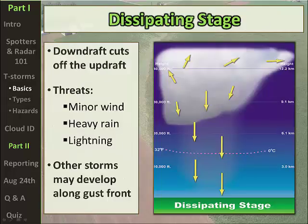The third and final stage is the dissipating stage. Here, the downdraft becomes strong enough that the updraft can no longer be sustained, so we're essentially left with just the downdraft. Threats at this stage include minor wind, heavy rain, and lightning. Hail is not listed as a threat because it feeds off the updraft, which has been dissipating. However, isolated damaging wind gusts can still occur. Other storms may also develop along the gust front — the leading edge of the downdraft air.